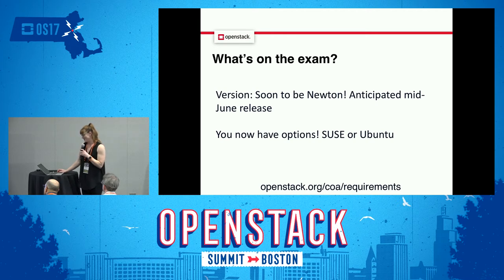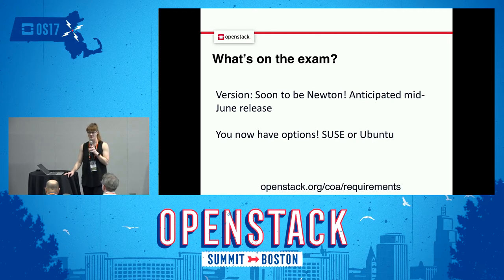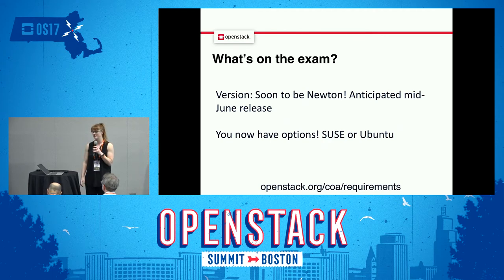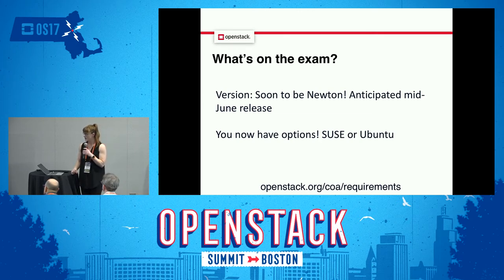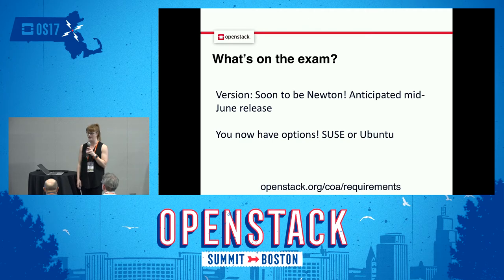Before we get to what's on the exam, some quick announcements. Right now the COA is on Liberty, and very shortly — hopefully by mid-June — it will be on Newton. For most people that's not a big deal because the COA tests the core components of OpenStack, so those nuances between versions you're really not seeing. A lot of what's coming in mid-June are user improvements: quicker test time and a better UI experience overall. If you can wait about four to six weeks, I'm really excited for this release.